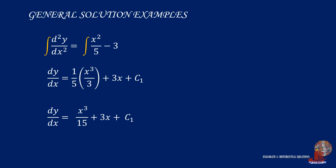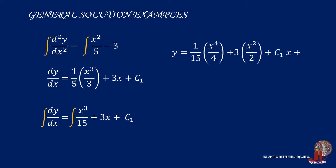Since there is still a derivative remaining, we perform another integration. Integrating dy/dx gives y. x cubed over 15 integrates to x to the fourth power over 60. 3x integrates to 3x squared over 2. c1 becomes c1x, and a second arbitrary constant c2 appears. So the general solution is y equals x to the fourth power over 60 plus 3x squared over 2 plus c1x plus c2.